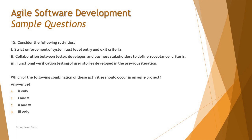Activity three — functional verification testing of user stories developed in the previous iteration — refers to testing in a repeat or later sprint. In agile, testing is completed within the same sprint in which the feature is implemented, within that 10-day timebox. So activity three is not aligned with agile. Activity one, strict enforcement of system test level entry and exit criteria, also seems worth questioning.